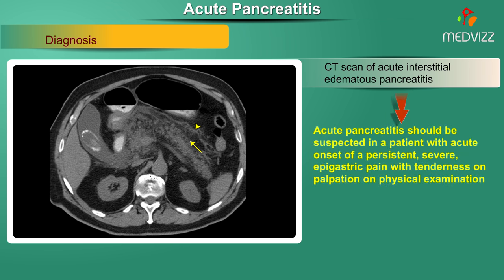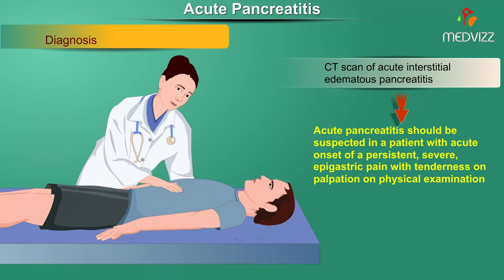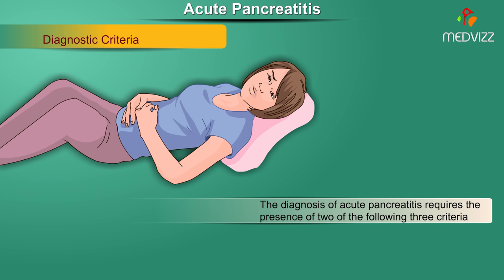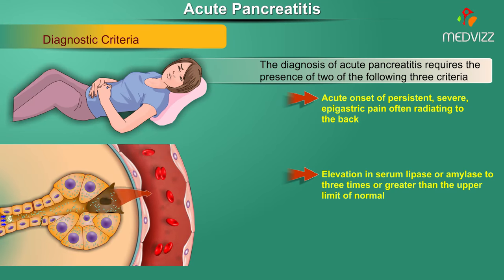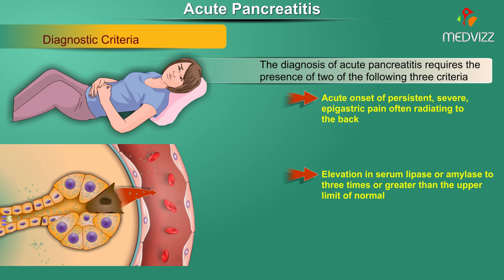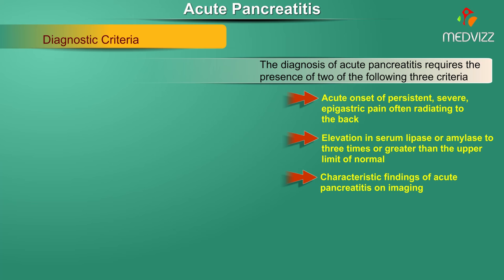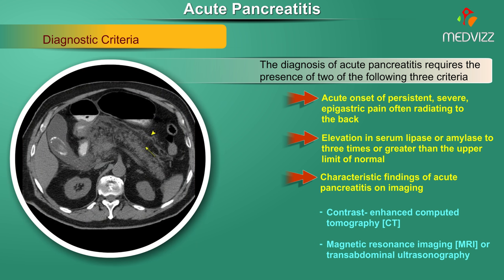Acute pancreatitis should be suspected in a patient with acute onset of persistent severe epigastric pain with tenderness on palpation. Diagnosis requires two of the following criteria: acute onset of persistent severe epigastric pain often radiating to the back; elevation in serum lipase or amylase to three times or greater than the upper limit of normal; and characteristic findings of acute pancreatitis on imaging — CT, MRI, or transabdominal ultrasonography.